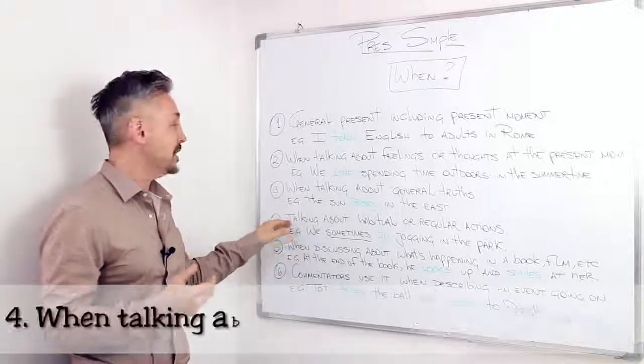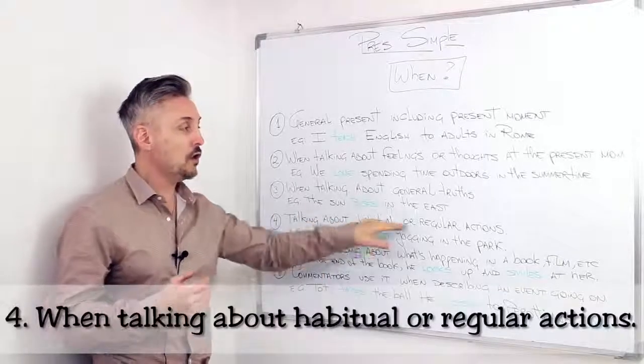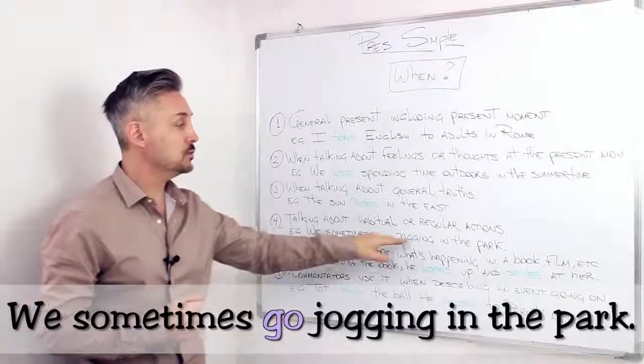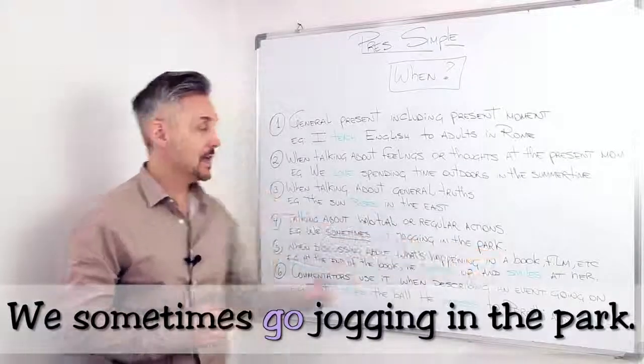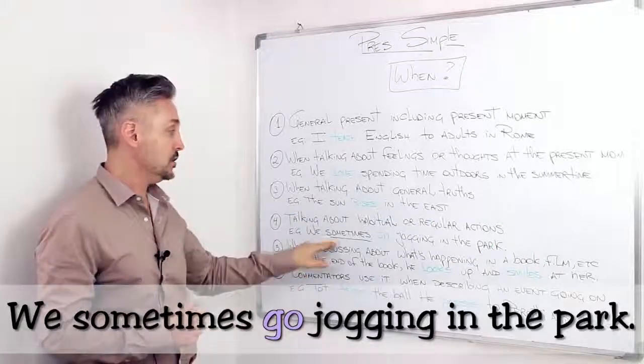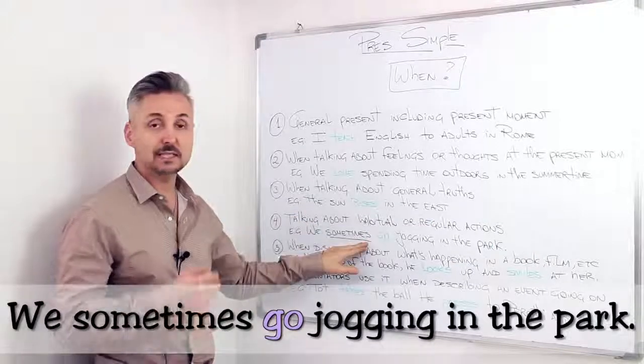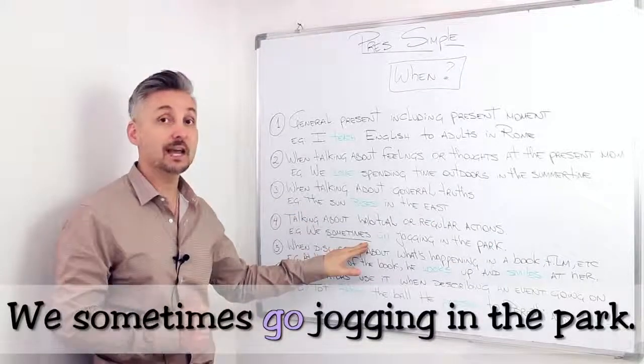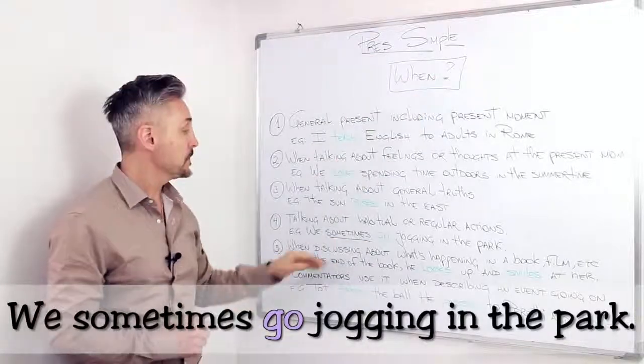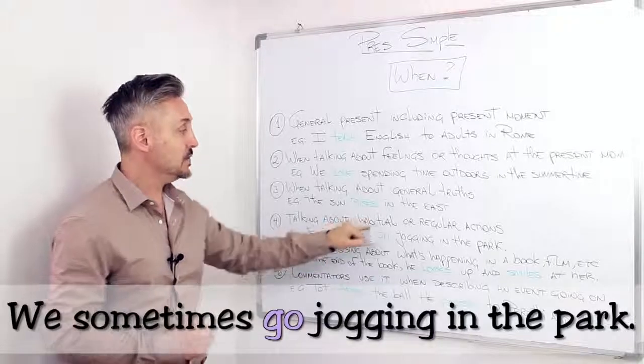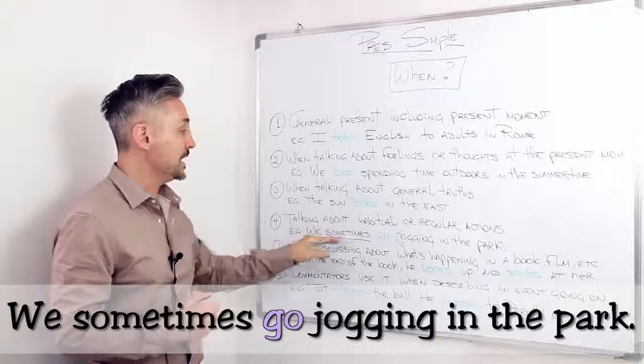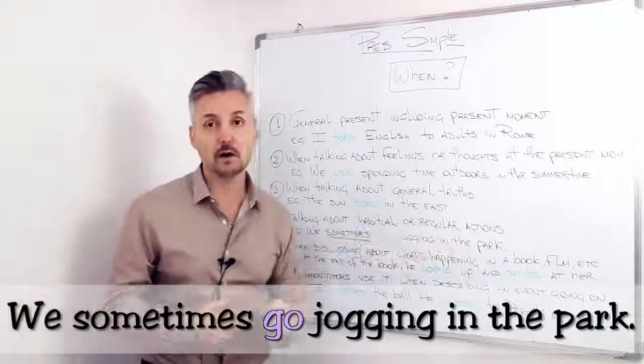Now, the fourth, when talking about habitual or regular actions. We sometimes go jogging in the park. And, what do I mean by habitual or regular actions? Well, you can see, sometimes, is an adverb of frequency, and there is a lesson on this. You can click here, if you want to watch it. That tells you that it is a regular or habitual action. We sometimes go jogging in the park.